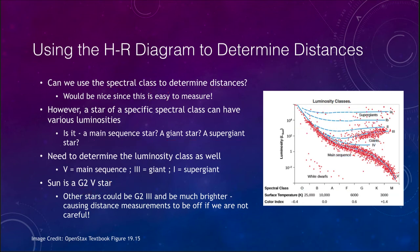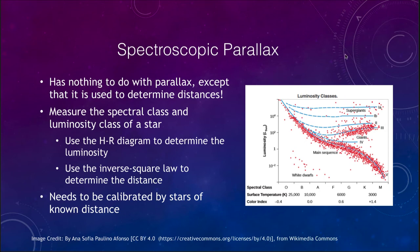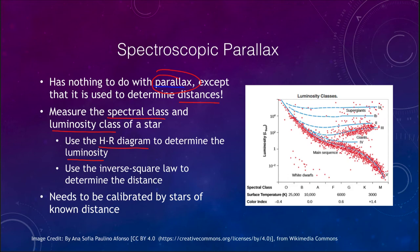Let's look at how we can use this to determine distances. It has nothing to do with parallax even though we call it spectroscopic parallax — it is being used simply to determine distances. What we do is measure two things: we need to get the spectral class of a star and the luminosity class of the star. Once we do that, we can find its position on the HR diagram and use that to determine the luminosity. Once we know the luminosity, we can then use the inverse square law to determine the distance to the star.